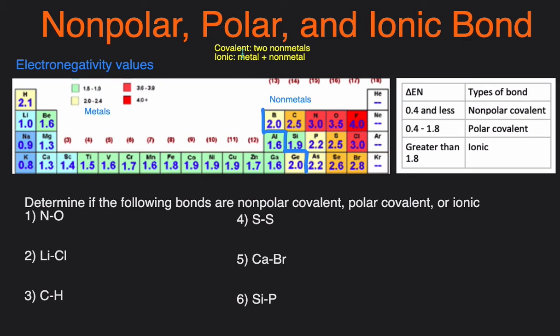Covalent bonds can be broken down into two smaller categories, non-polar and polar. Non-polar covalent bonds are those that involve equal or nearly equal sharing of electrons, and polar covalent bonds involve unequal sharing of electrons, which will lead to partial positive and partial negative charges.